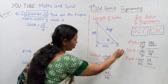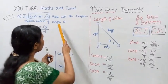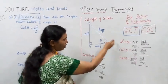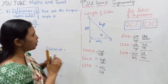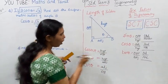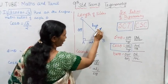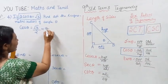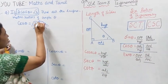It is very important. 2 cos theta equal to root 3. Remember, considering a right angle triangle with theta, the adjacent side — cos theta is adjacent by hypotenuse.